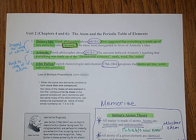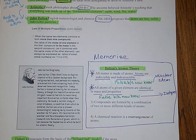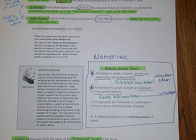So Democritus came up with the idea of atoms, Aristotle dropped the idea of atoms, and then John Dalton came back and picked up the idea of atoms. Dalton came up with the atomic theory, which included four postulates. The very first postulate said that all matter is made up of atoms, and atoms are indivisible and indestructible.